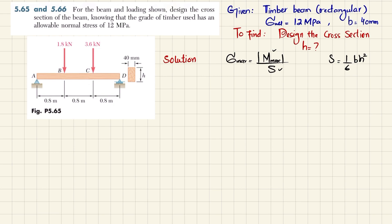We will draw the shear force and bending moment diagram. First, remove the support at A to get vertical reaction force A, and remove the support at D to get vertical reaction force D. We find these using the equilibrium condition: the sum of all moments about point D equals zero, taking counterclockwise as positive.